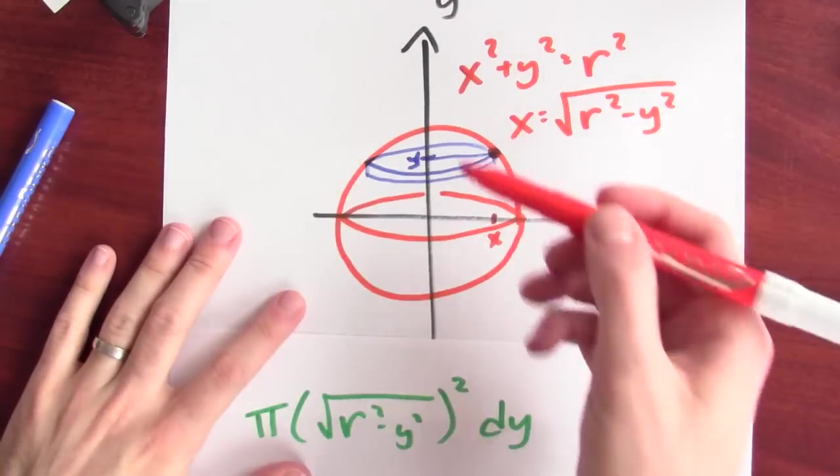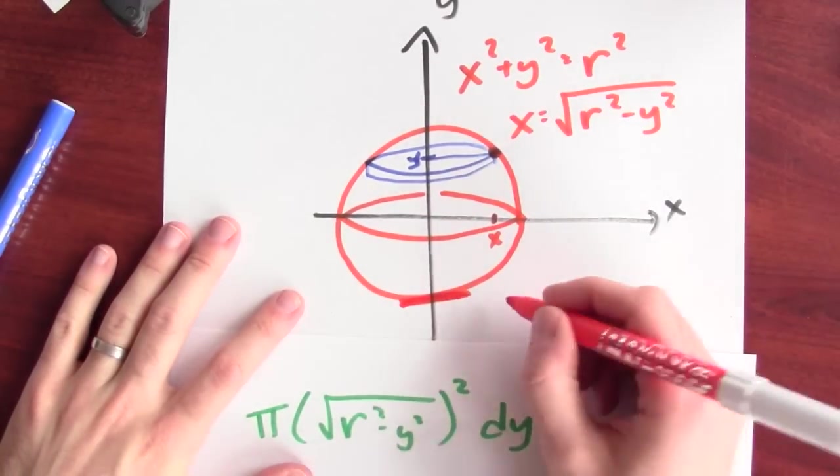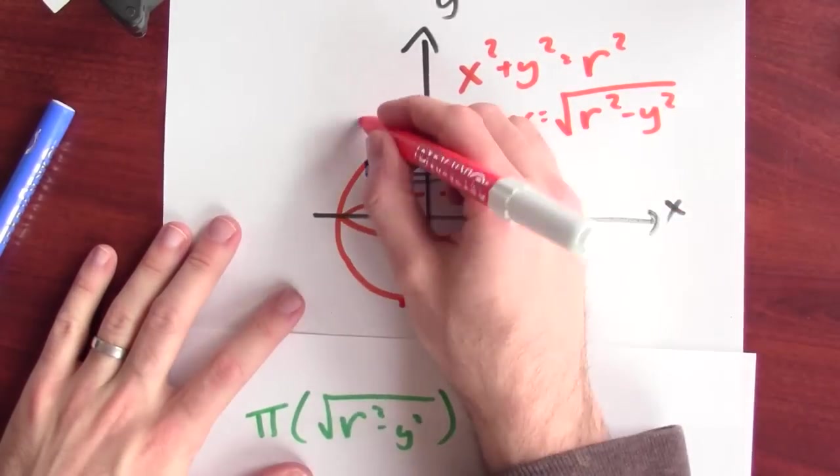We have to think about the end points of integration. How big and how small can y be? Well, y goes all the way down here to minus r, and y goes all the way up here to r.